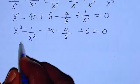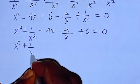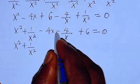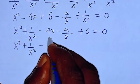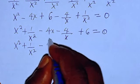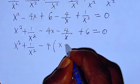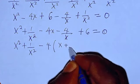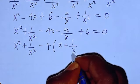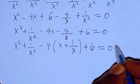We have x squared plus 1 over x squared. Here I can take out the negative, with 4 as the common factor: minus 4 times (x plus 1 over x), then plus 6 equals 0.